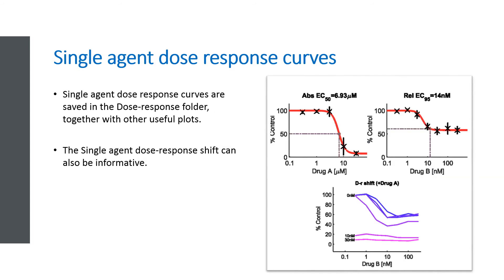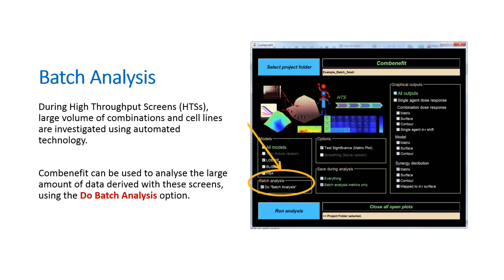Single-agent dose response curves are saved in the Dose Response folder, together with other useful plots. The single-agent dose response shift can also be informative. During high-throughput screens, large volumes of combinations and cell lines are investigated using automated technology. ComBenefit can be used to analyze the large amount of data derived with these screens, using the Do Batch Analysis option.